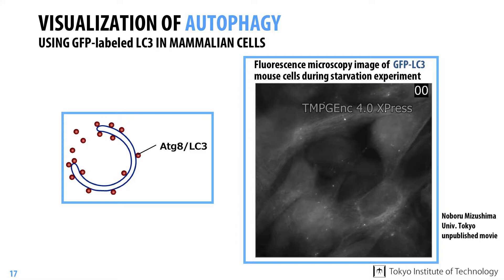By expressing these proteins as a fusion protein with green fluorescent protein, which is usually called GFP, researchers were able to observe autophagy in living cells under a fluorescence microscope.